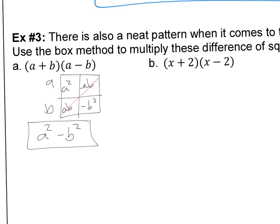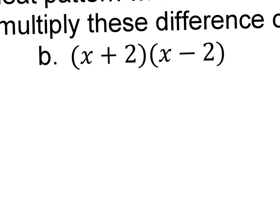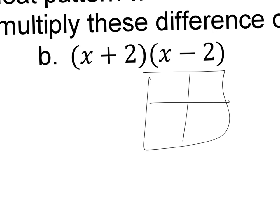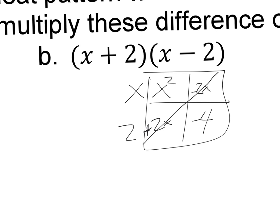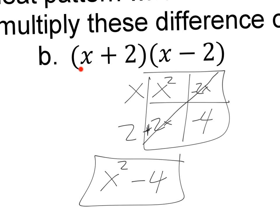Let's verify with x plus 2 times x minus 2. We get x squared, minus 2x, then plus 2x, and then negative 2 times positive 2 is negative 4. The 2x and negative 2x cancel, and we're left with x squared minus 4. All we have to do is take the first term, square it, minus the second term, square it — and we're done.